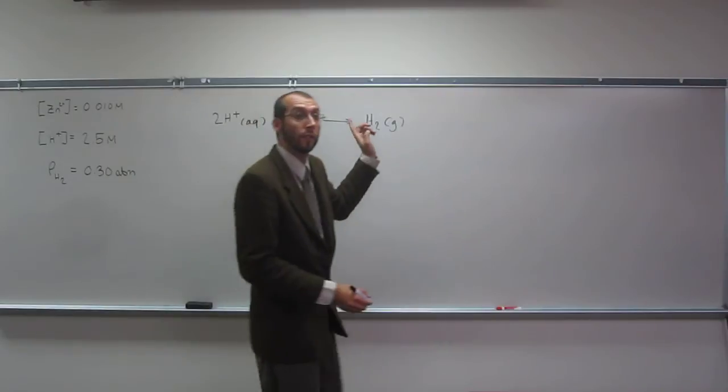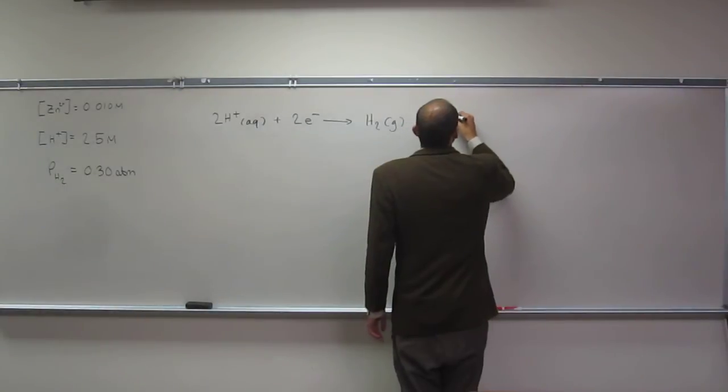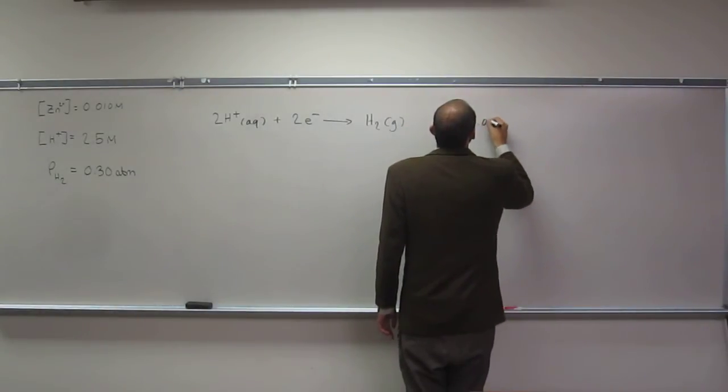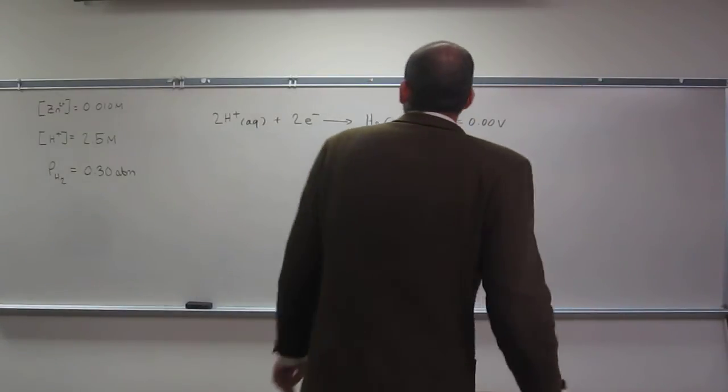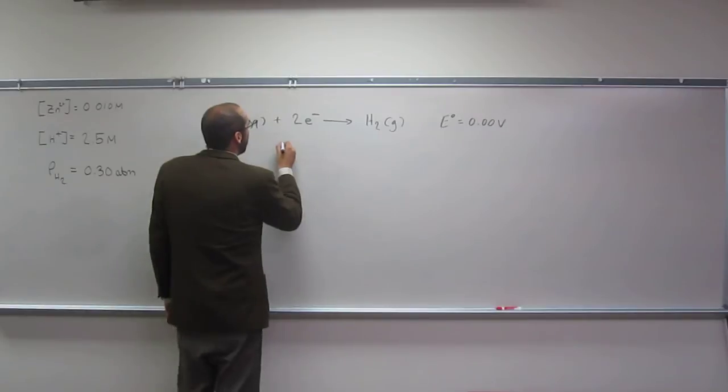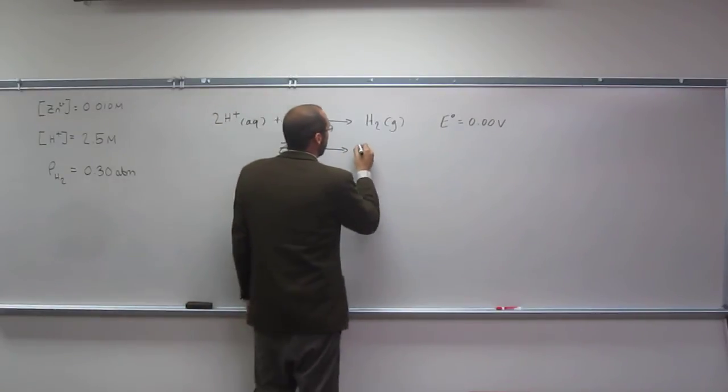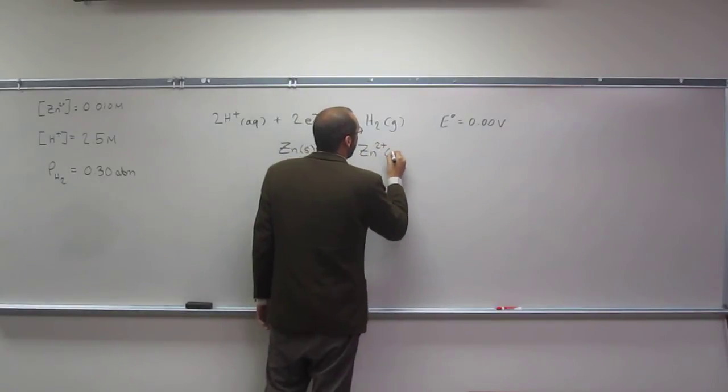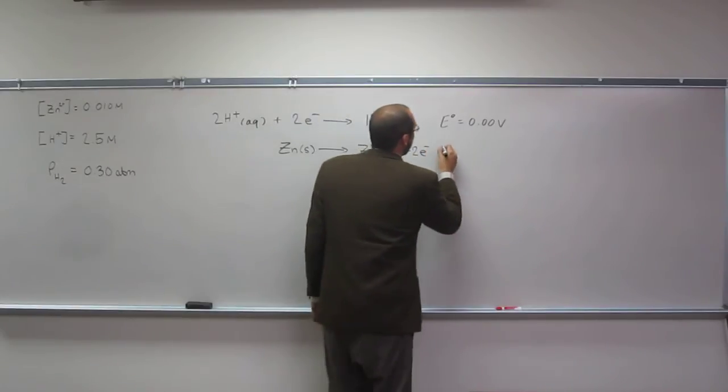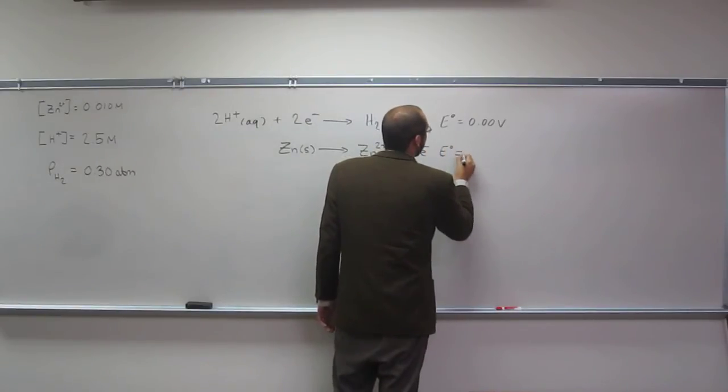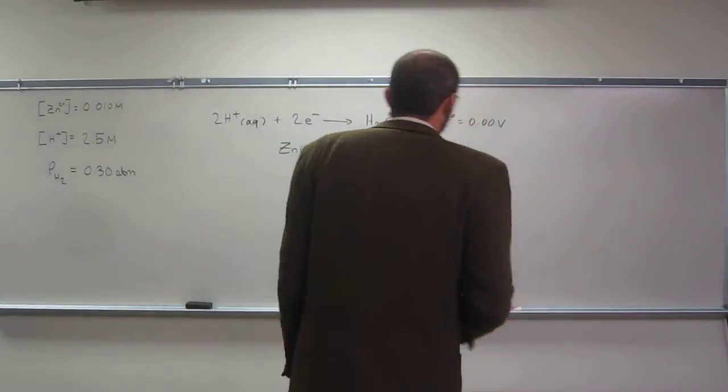Okay, so that particular one is 0.00 volts. And then the zinc half-reaction is going to be zinc solid goes to zinc 2 plus aqueous plus two electrons. And then of course, in this case, you're going to have to look at your table and figure out what potential that is.